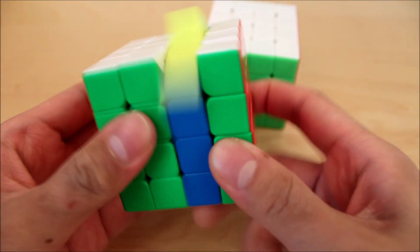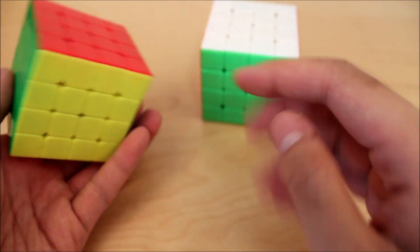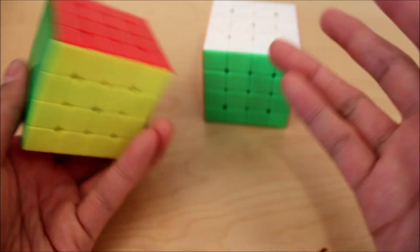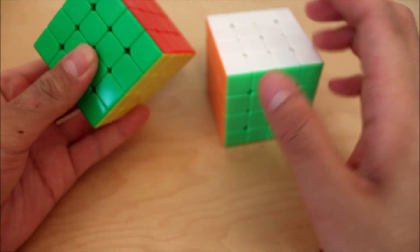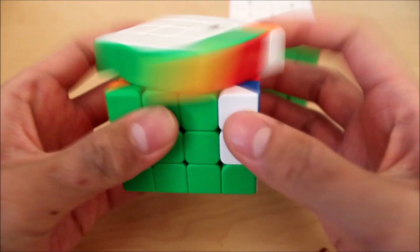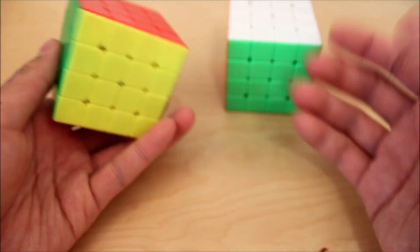However, if you have bigger hands and you don't think you'll like these smaller layers, the GTS2 is perfectly fine and they perform pretty similarly. However, if you have none of these cubes and you want to buy a new 4x4, I think the WRM is going to be a safer choice. Mainly because I think the smaller size is better and it's also cheaper, so that's also pretty nice.